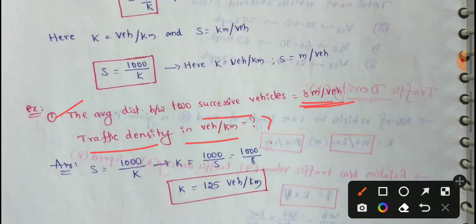So S is equal to the formula: if we measure, 1000 by K. So if we measure the density, traffic density is K equals 1000 by S.